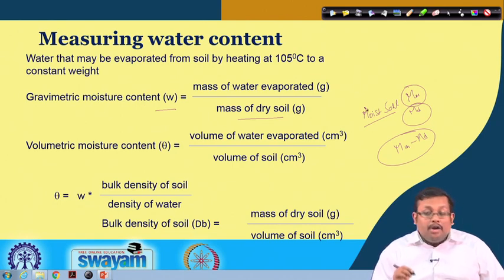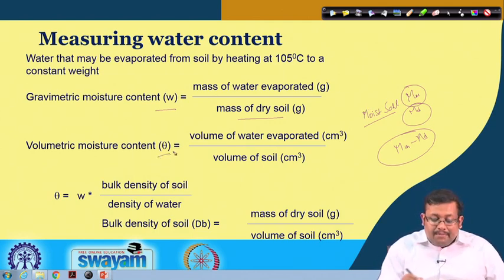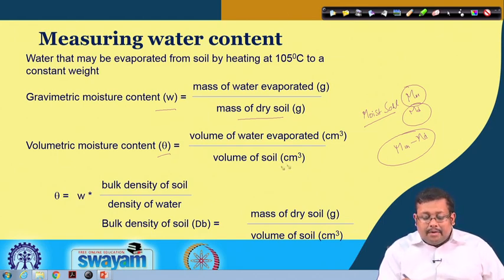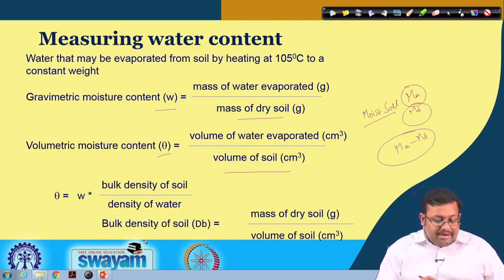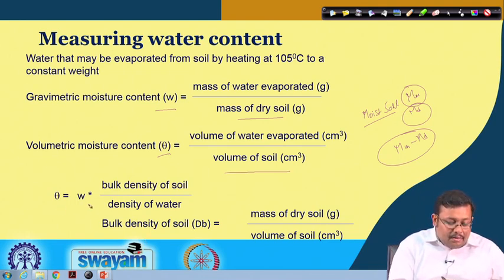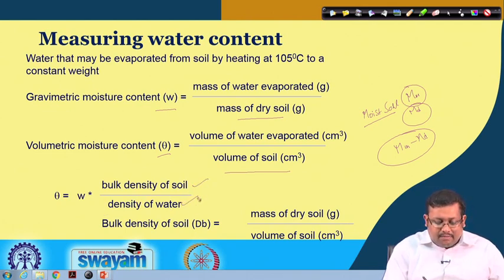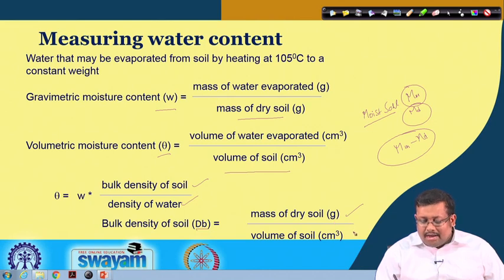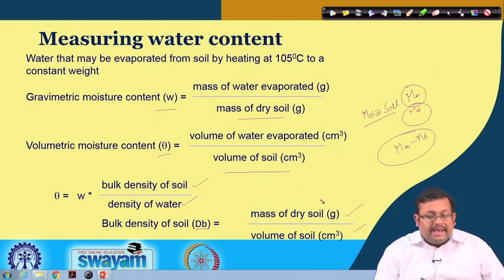There is another direct method called volumetric moisture content, generally expressed as theta. Volumetric moisture content is basically volume of water over the volume of soil. The relationship between volumetric and gravimetric moisture content is: theta equals W (gravimetric moisture content) multiplied by bulk density of soil over density of water (which is generally 1). Bulk density d_b is mass of dry soil over volume of soil. Using this formula we can convert between volumetric and gravimetric moisture content.